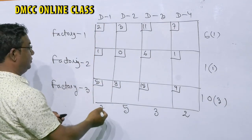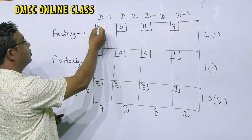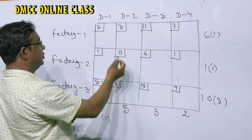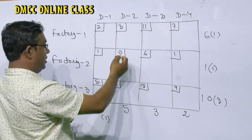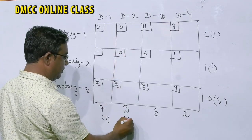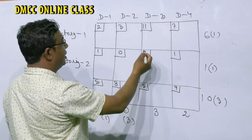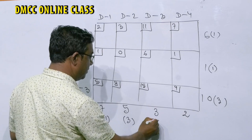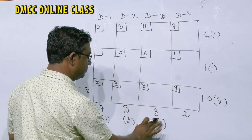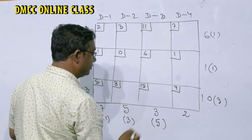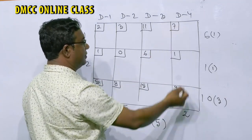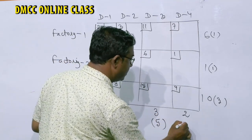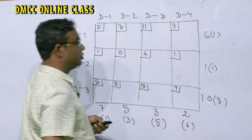For the columns: in column one, the smallest is 1, next is 2, so difference is 1. In column two, smallest is 0, next is 3, so difference is 3. In column three, the smallest is 6, next is 11, so difference is 5. In column four, the smallest is 1, next is 7, so difference is 6.